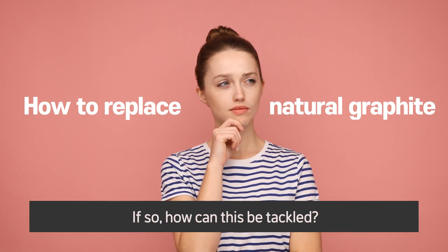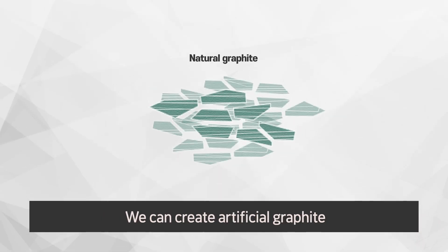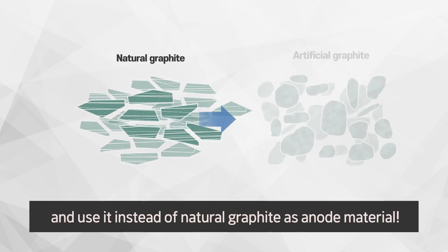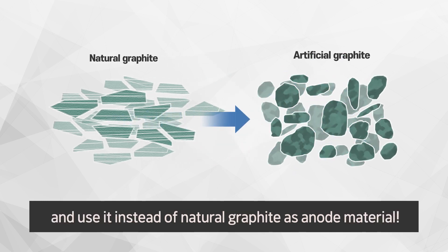If so, how can this be tackled? We can create artificial graphite and use it instead of natural graphite as anode material.